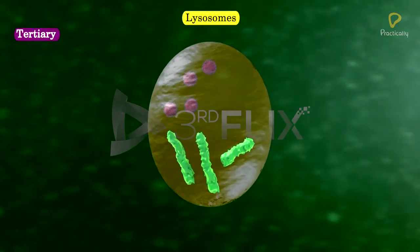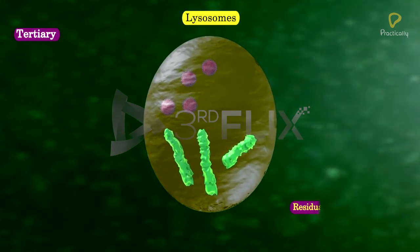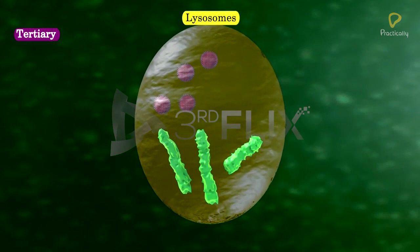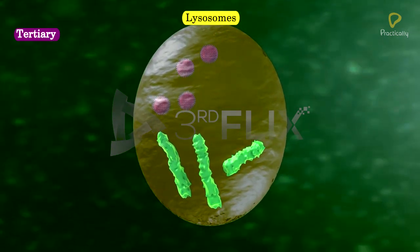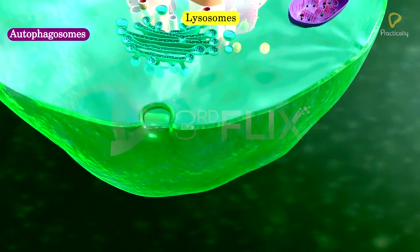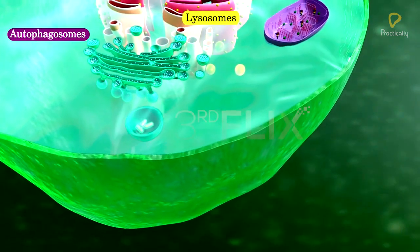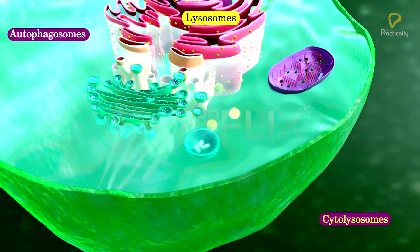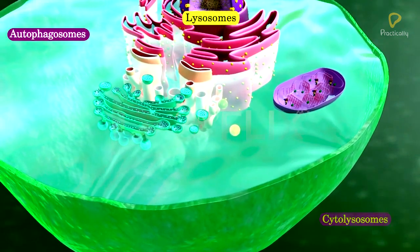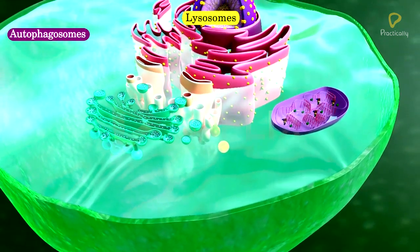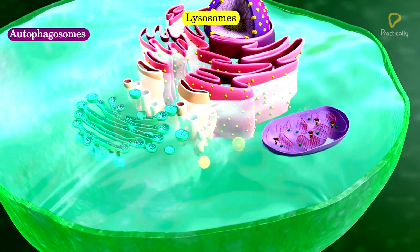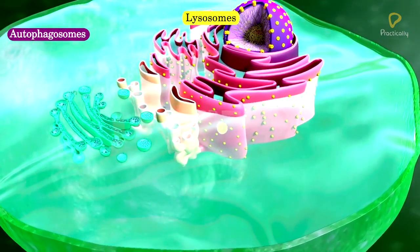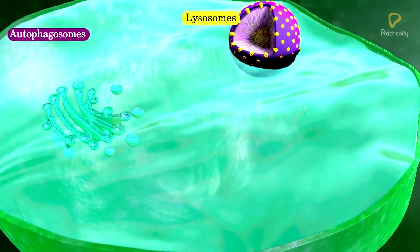Tertiary lysosomes are also called residual bodies. They contain undigested food particles and enzymes. Autophagosomes are also called autolysosomes or cytolysosomes. These autophagosomes envelop and attack interior cellular organelles like mitochondria and endoplasmic reticulum, and digest them during starvation.